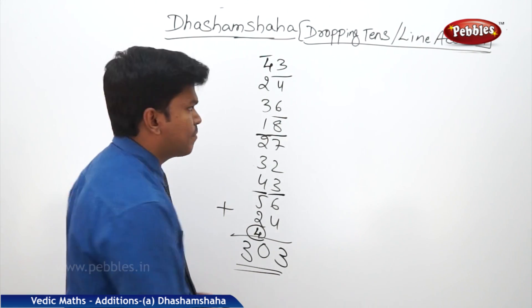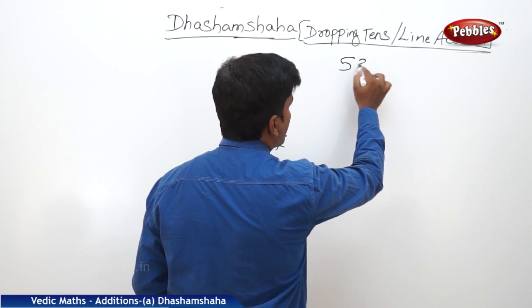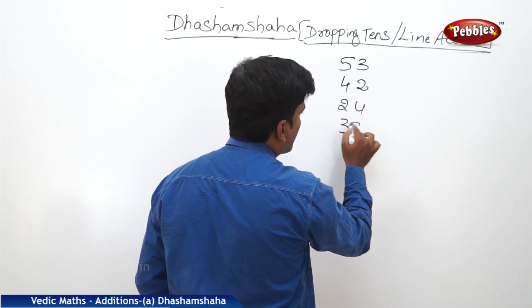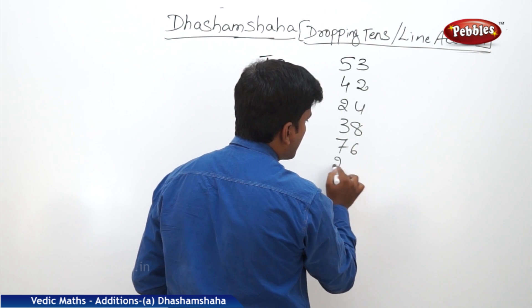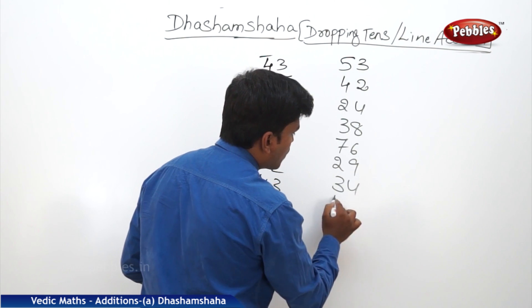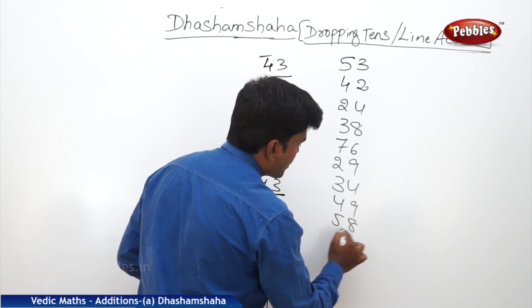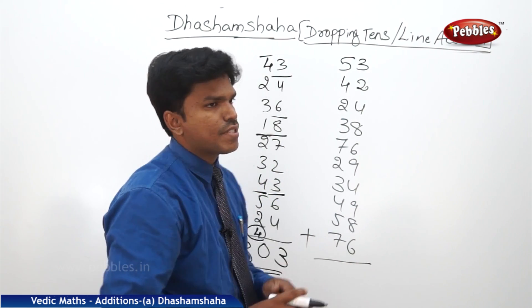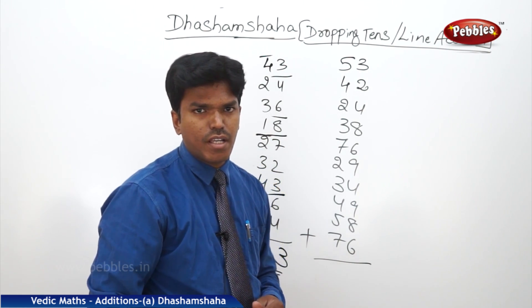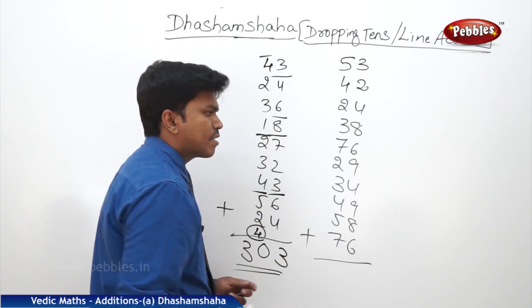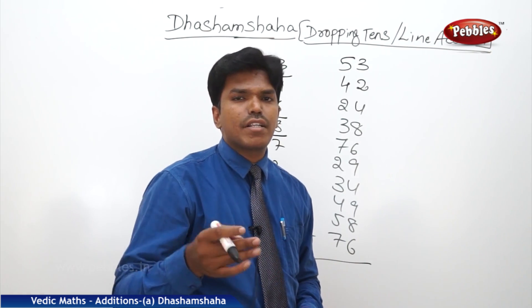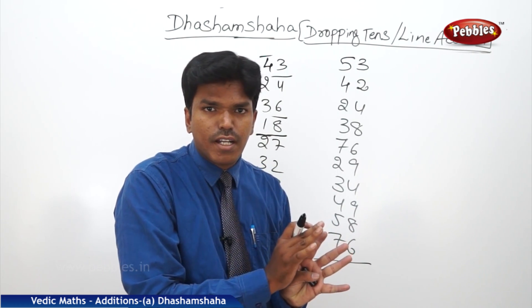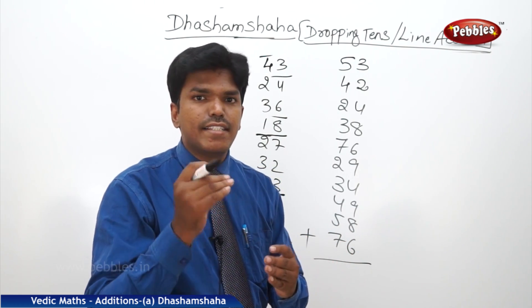Let us take one more example: 53, 42, 24, 38, 76, 29, 34, 49, 58, 76. We have to add these numbers. Ready? Now let us start from the right side. This time I will go a little fast, so keep concentrated so that you can understand easily.